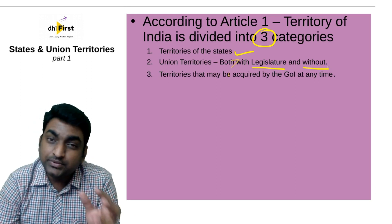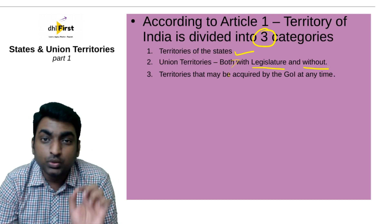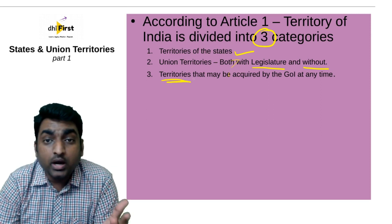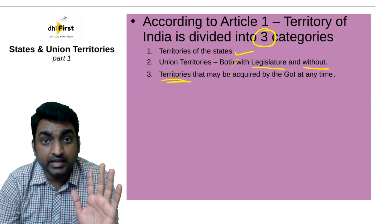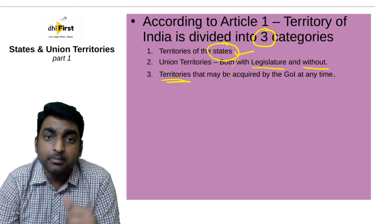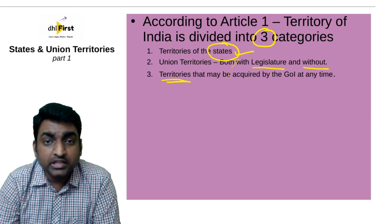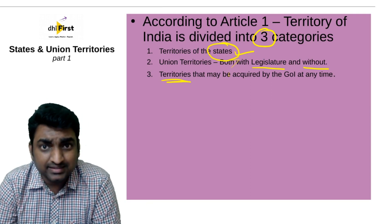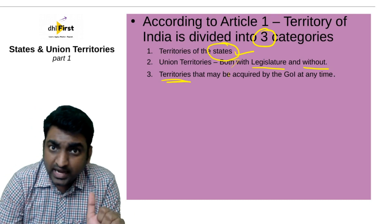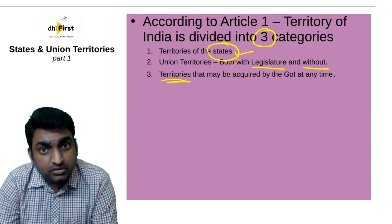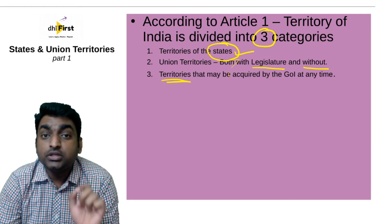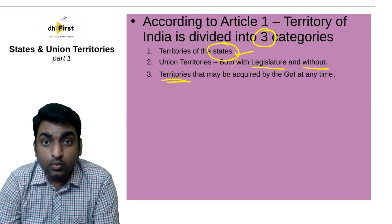The third category consists of territories that may be acquired by the Government of India at any time. So the first category is territories of states — Tamil Nadu, Punjab, Assam, Arunachal Pradesh, and so on. We have around 28 states now; we had 29. The second is union territories, including both legislature and non-legislature UTs. The third is territories which India can acquire in the future.